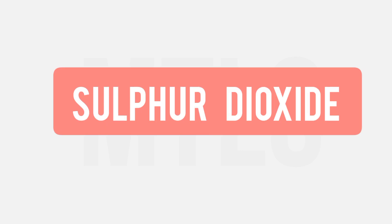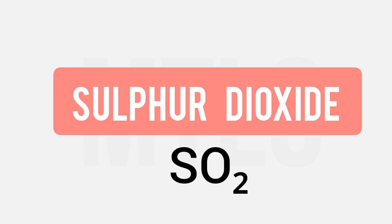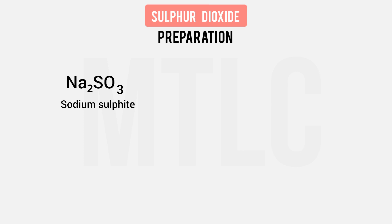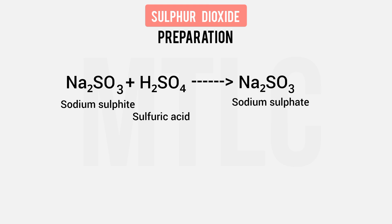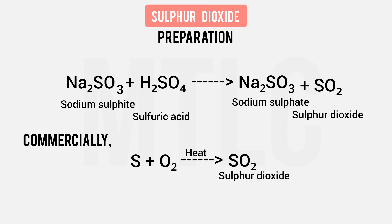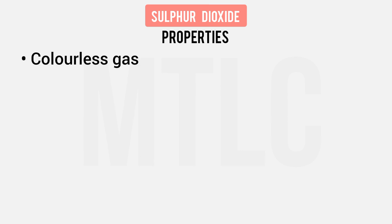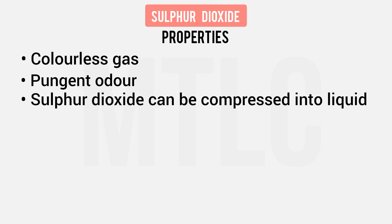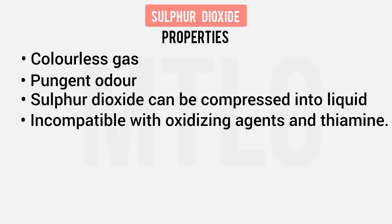Next is Sulfur Dioxide, with formula SO2. To prepare Sulfur Dioxide, we use Na2SO3 and add Sulfuric Acid. This gives Sodium Sulfate plus Sulfur Dioxide. It is a colorless gas with a pungent smell. When compressed, Sulfur Dioxide gas forms liquid Sulfur Dioxide.